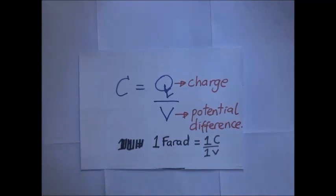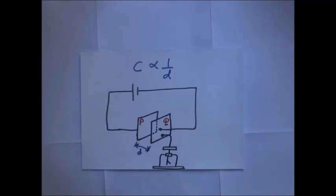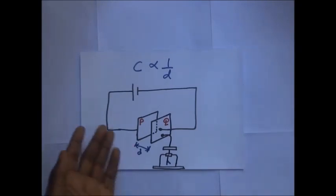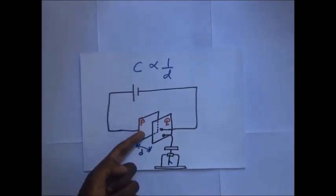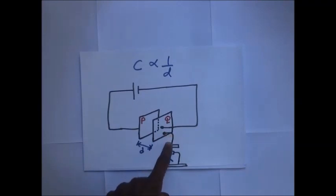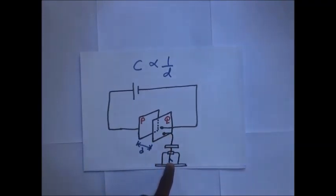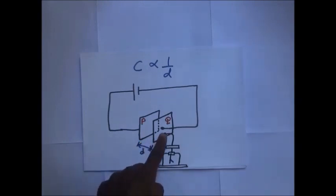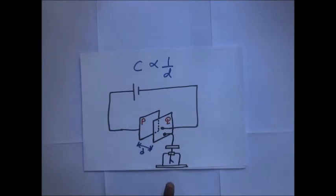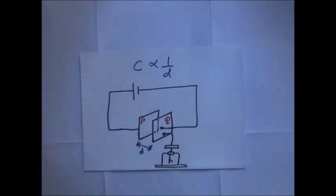There are basically three factors that affect the capacitance of a capacitor. The first is the distance of separation between the plates, the second is the area of overlap, and the third is the permittivity of the dielectric. To illustrate this we use a setup with plates P and Q connected to a gold leaf electroscope. The gold leaf electroscope tells us whether the charge — and hence the capacitance — is increasing or decreasing based on the divergence of its leaves.